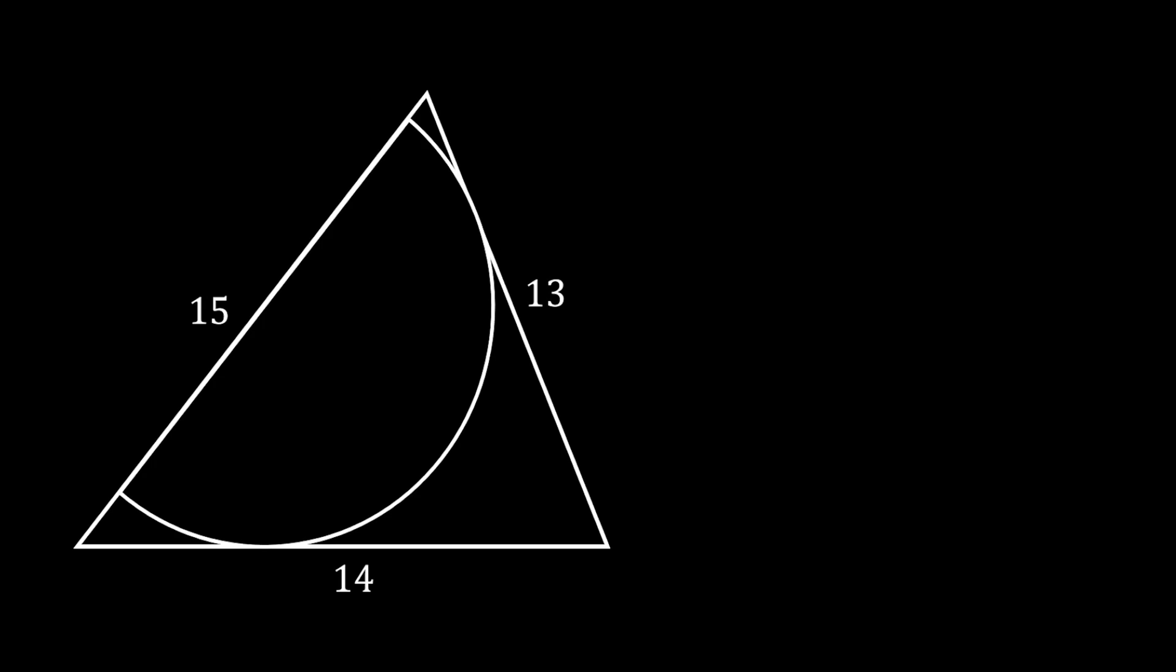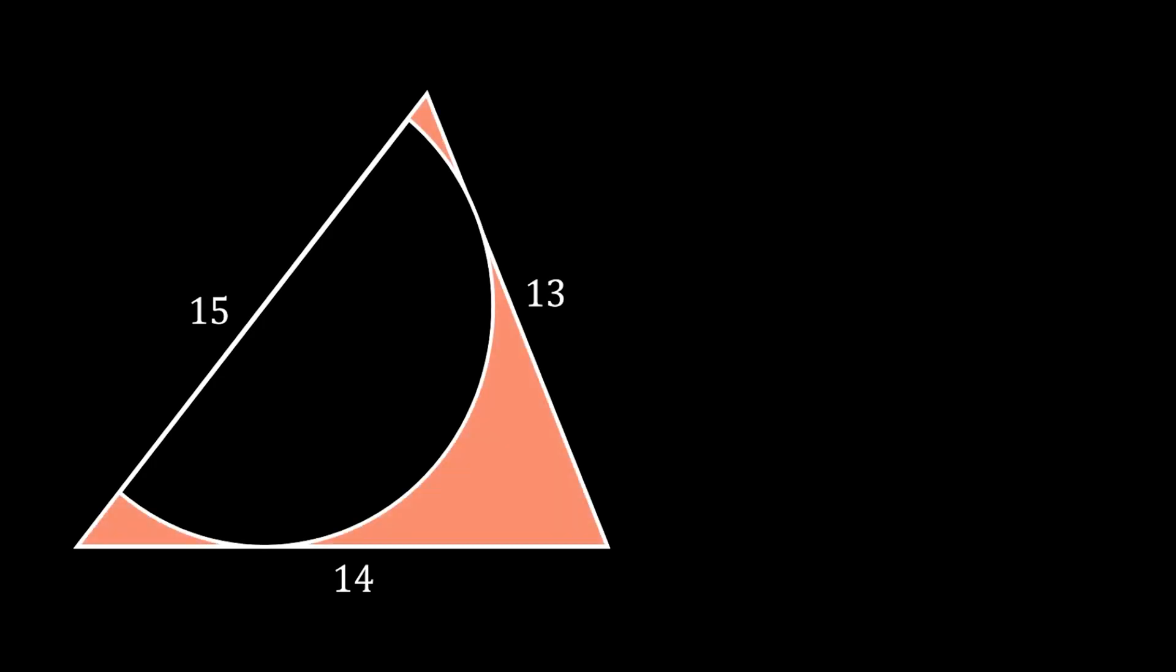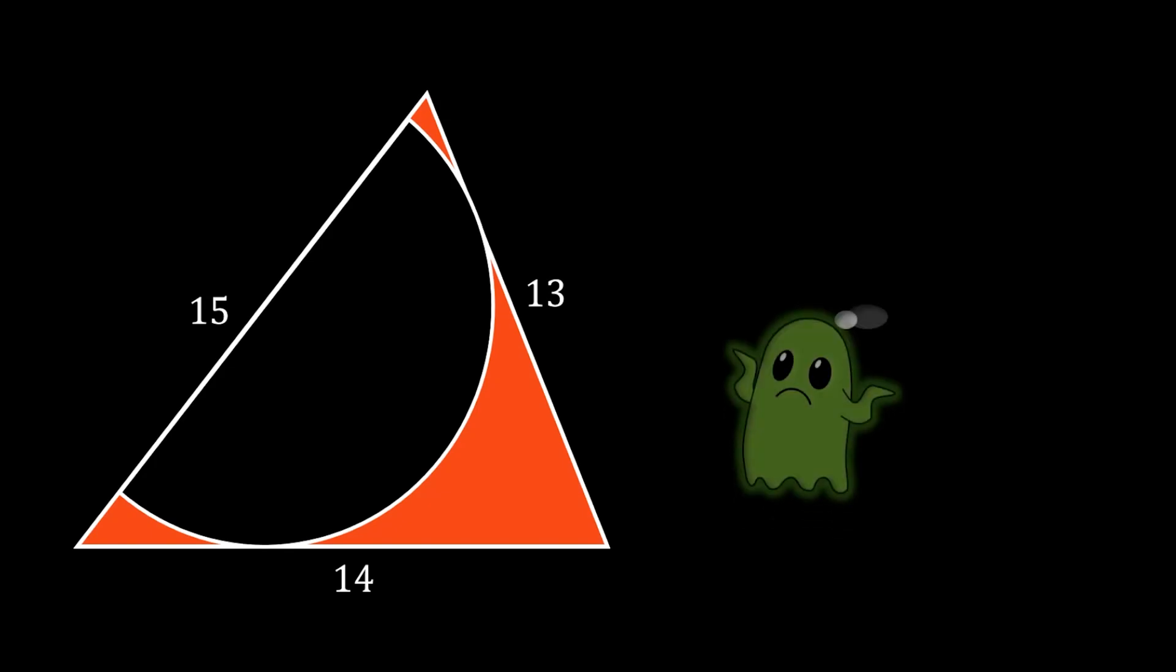The question is, can we somehow calculate this orange shaded area of the intersection between triangle and the half circle?